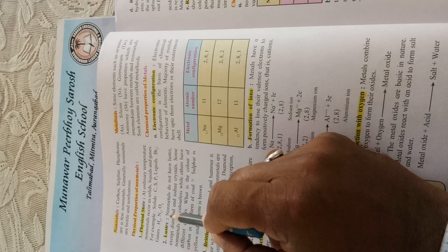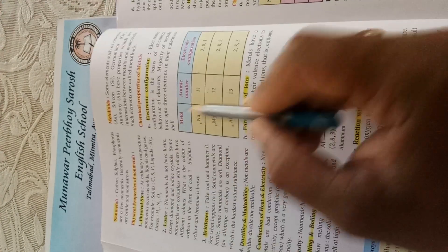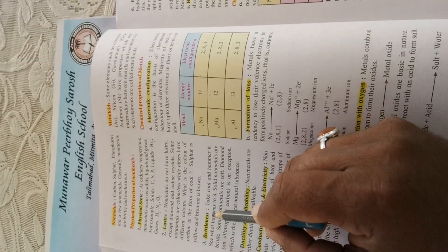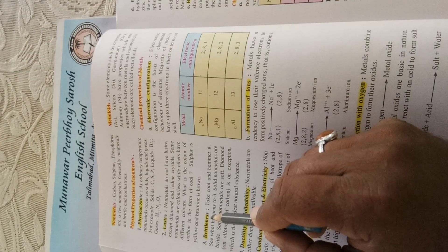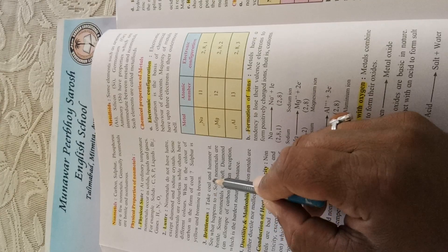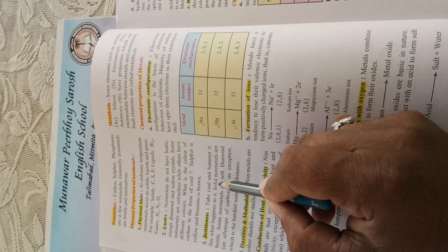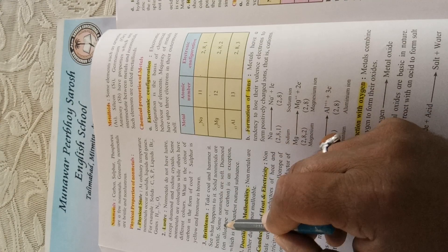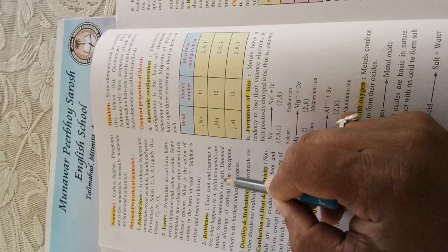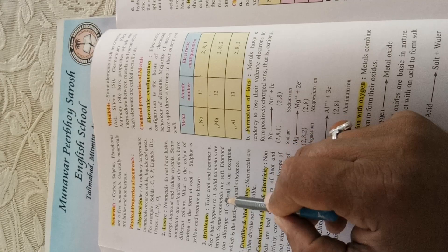Now brittleness. As you already know, brittleness means easily breakable. Take coal and hammer it; see what happens to it. Solid nonmetals are brittle. Some nonmetals are soft.